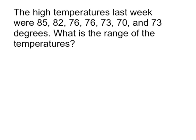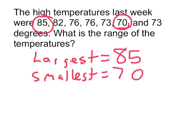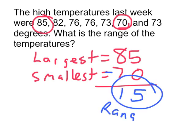So when we're trying to find the range, we're looking for the smallest and largest number. So the largest is 85, and the smallest one is 70. And to find the range from 70 to 85, all you do is subtract. So 85 minus 70 is 15. So our range is 15.